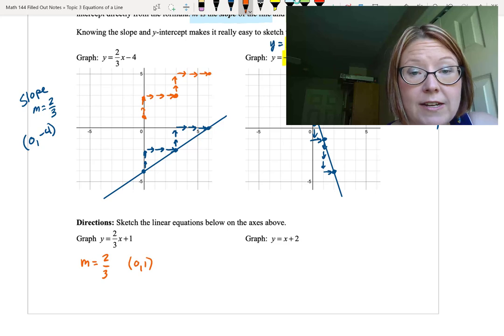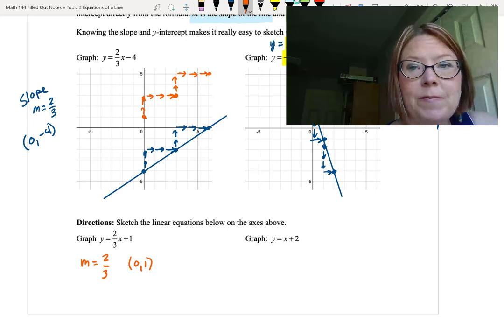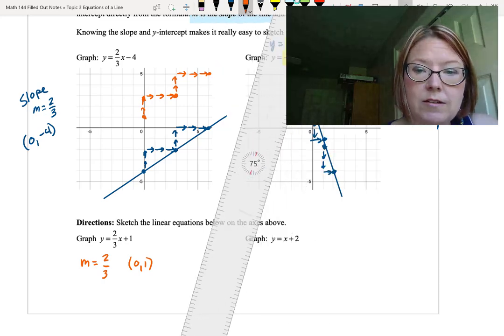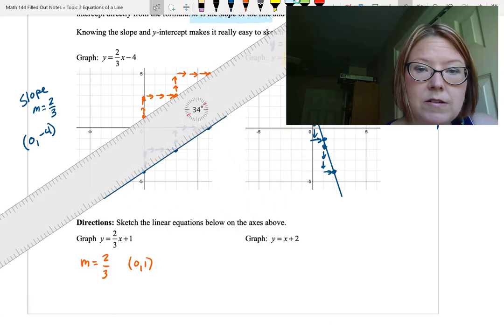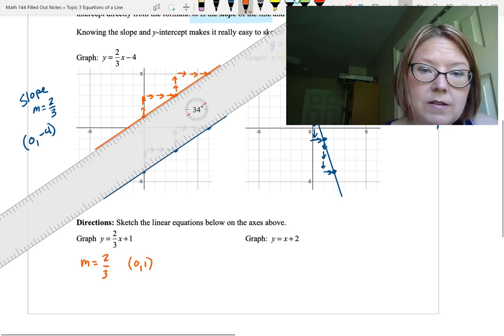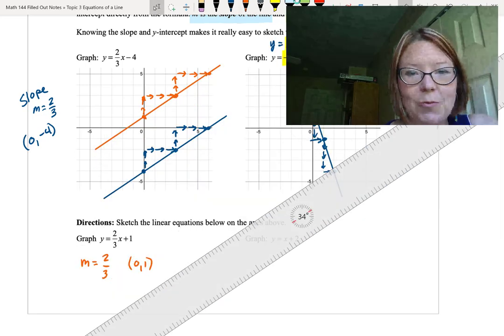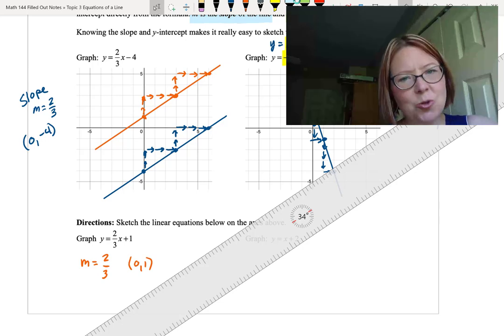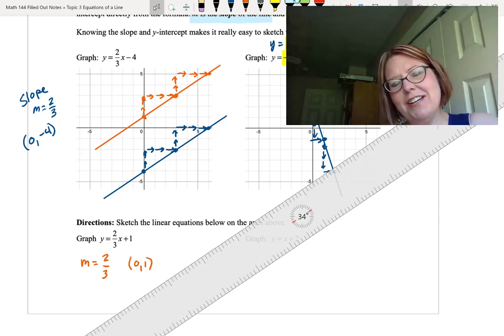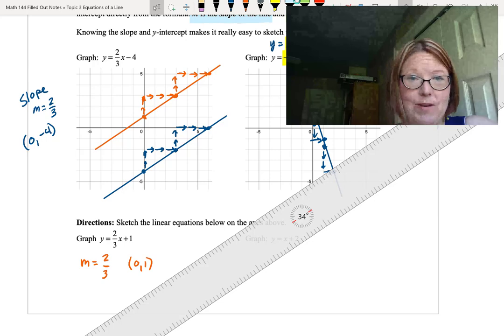That gives us new points. We started with 0, 1. Now we have 3, 3, and we have 6, 5. We pull in our ruler for that and connect those points.